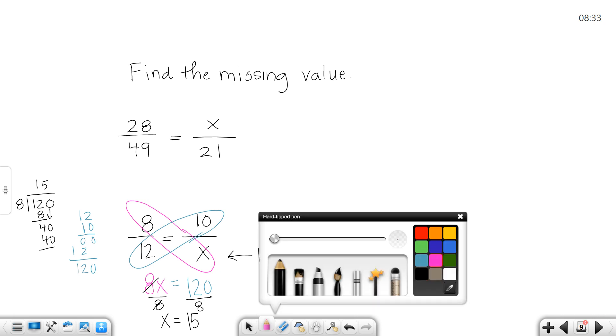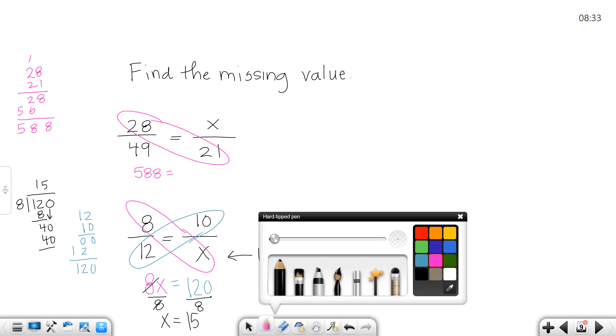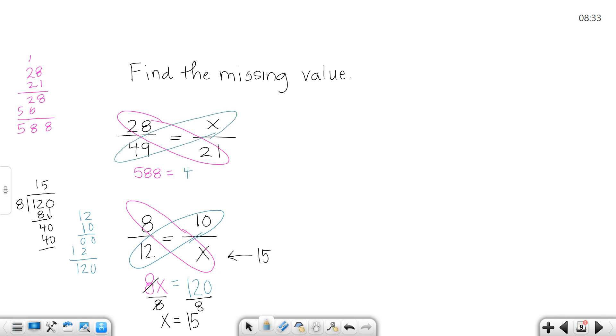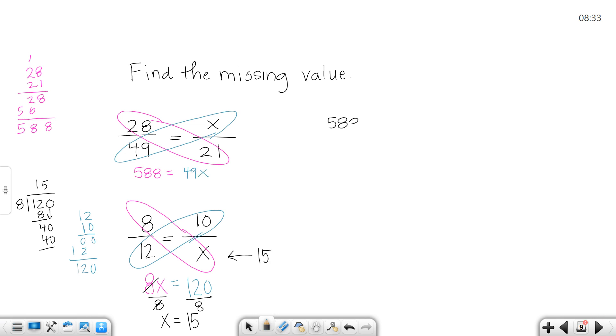Let's work the top when the numbers are just a lot bigger. When I work this one out, I have 28 times 21. I'm going to check my math because I'm a little rusty today. I think I'm good with that one. So my pink diagonal brings 588 and my blue diagonal is 49x. So I have 588 equals 49x.